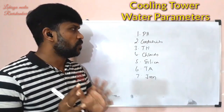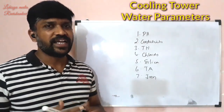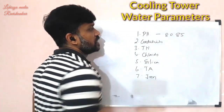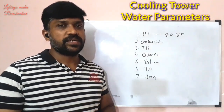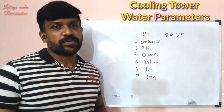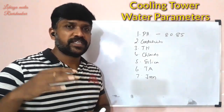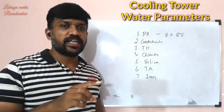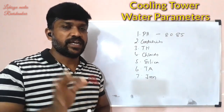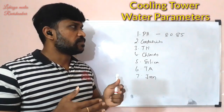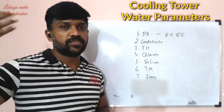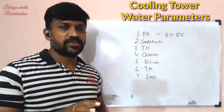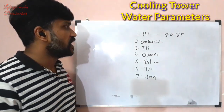For the cooling tower, there are various values and ranges. The pH value maximum is 8.5. We can maintain this cooling tower. pH stands for potential hydrogen. A pH of 7 is neutral on a scale of 0 to 14. Below 7 is acidity and above 7 is alkalinity. If the pH is too low, it indicates acidity and increases corrosion.